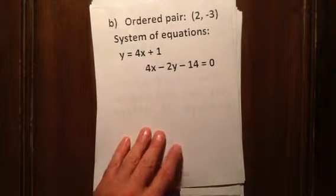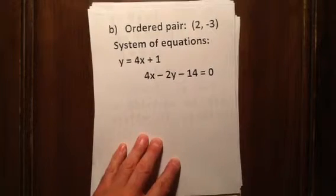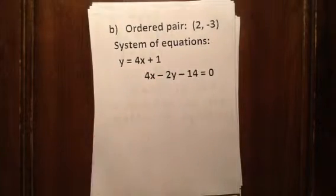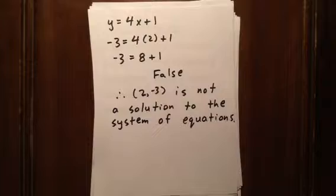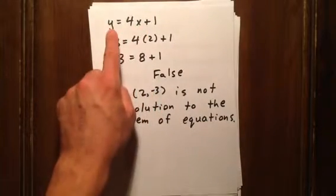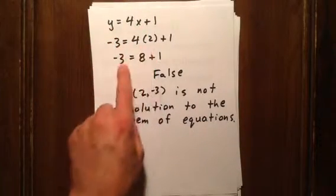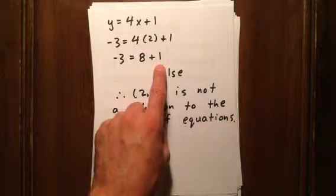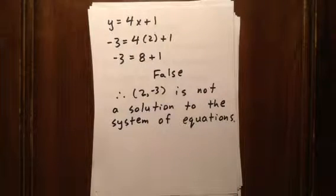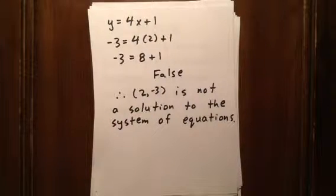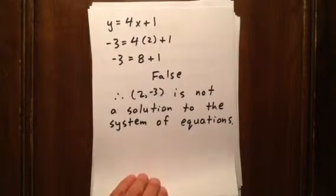Now consider the ordered pair (2, -3) with a different system of equations. Plugging in 2 for x and -3 for y in the first equation gives -3 equals 8 plus 1, which is definitely false. As soon as it doesn't work for one of the equations, you don't even have to try the other one — you can say right away this is not a solution to the system. So (2, -3) is not a solution.